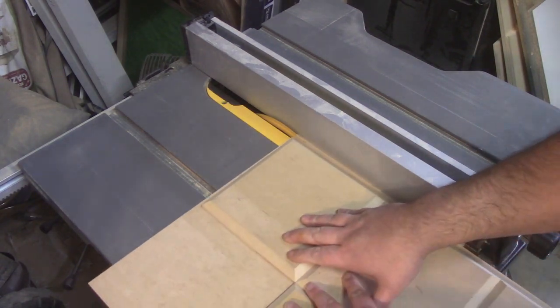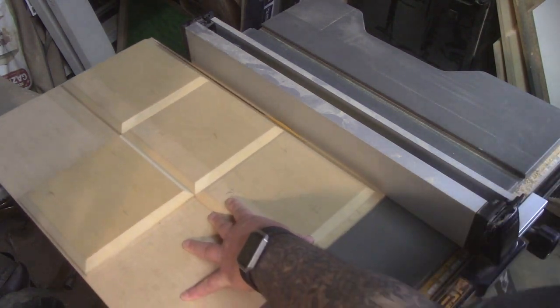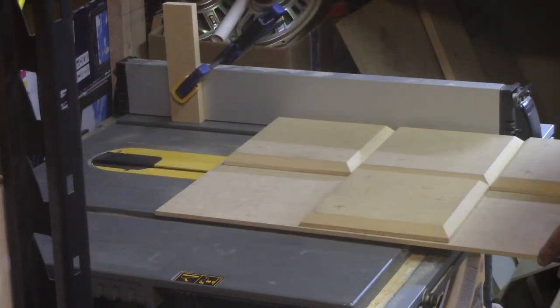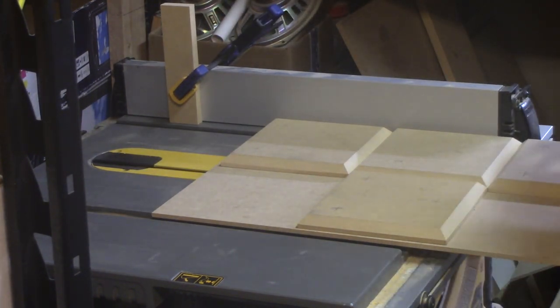And after the glue dried I trimmed off some of the extra backer board on the table saw by setting up some stop blocks and just eyeballing where to cut it. I set the stop blocks to stop the cuts early so I wouldn't cut into the main body.